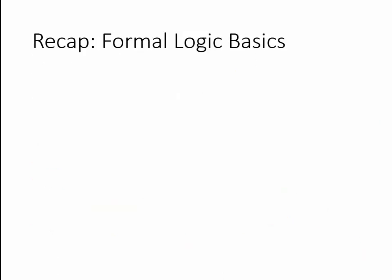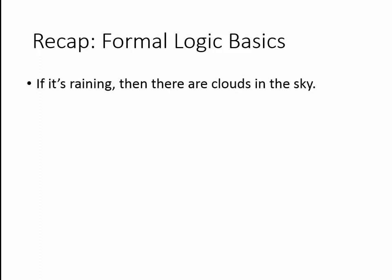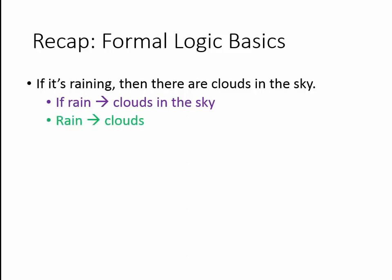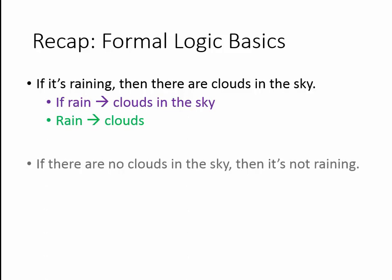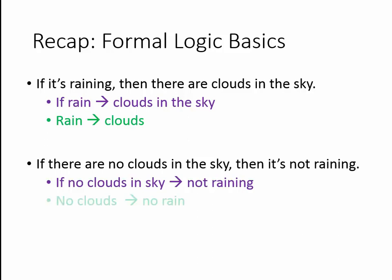To recap formal logic basics: our basic statement is if it's raining, then there are clouds in the sky. Another way to write that is: if rain, then clouds in the sky — using an arrow symbol, which we'll use a lot in logic games as a quicker way to write this phrase. An even faster way is simply: rain → clouds. The contrapositive is: if there are no clouds in the sky, then it's not raining, written as: no clouds → no rain. Getting comfortable with this shorthand will help you speed up your diagramming and inferencing during logic games.